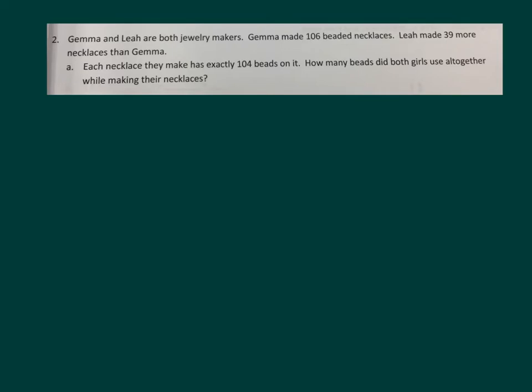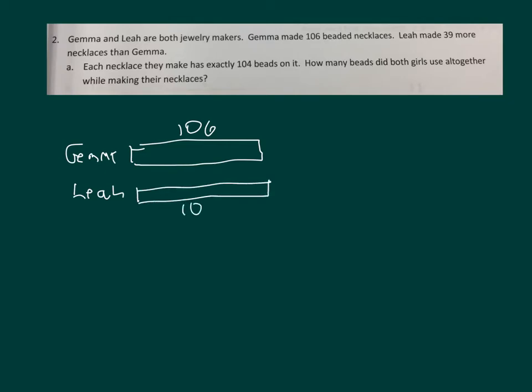What do we know? We know that Gemma made 106 beaded necklaces. So if we use a bar model, Gemma makes 106. Leah makes more, and it says 39 more. So here's 106 and then she makes actually 39 more. So 106 plus 39, 5, 1, she makes 145.